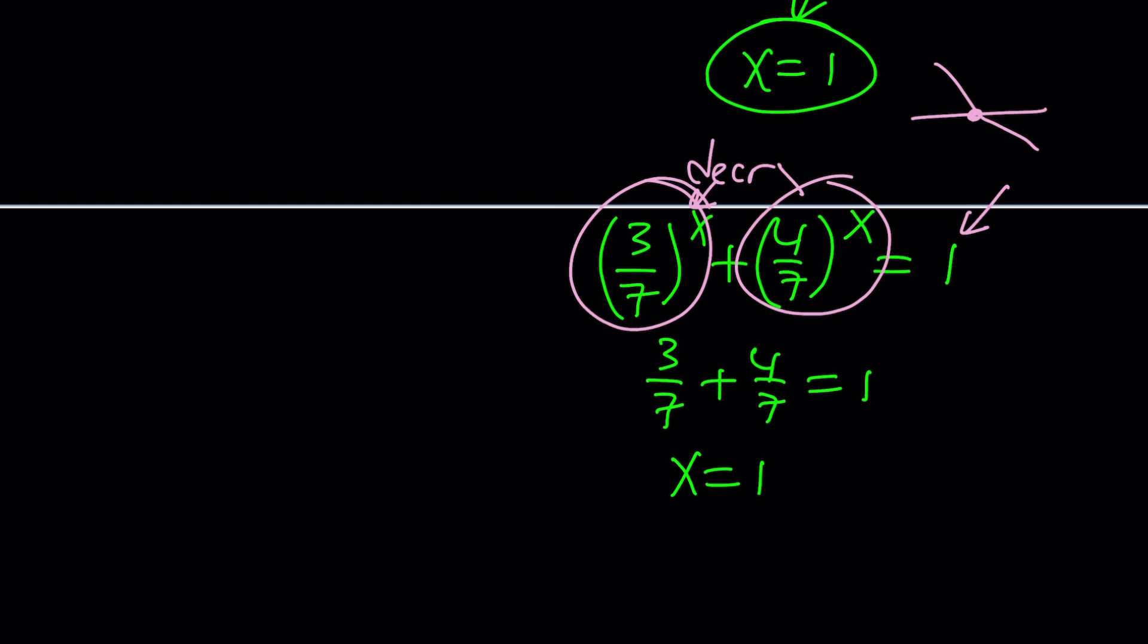And the right-hand side is a constant, so a decreasing function can only intersect a constant or horizontal line at a single point. Same thing goes for an increasing function, but if that function is increasing and decreasing, then you never know what's going to happen because it might intersect at more than one point.